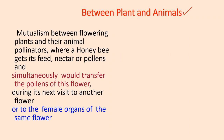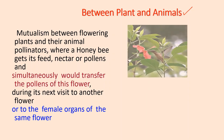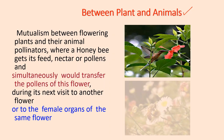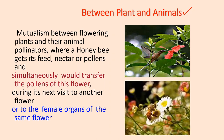One example is animal pollinators, where a honeybee gets its sweet nectar or pollen and simultaneously transfers the pollen of the flower during the next visit to another flower or to the female organs of the same flower.